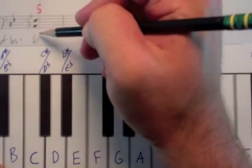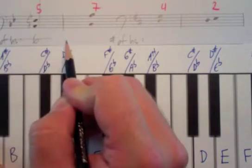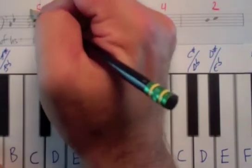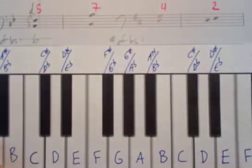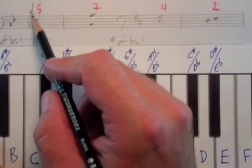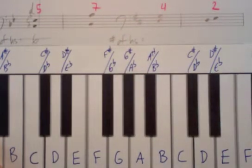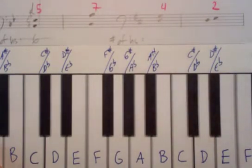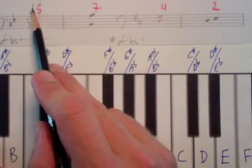Six half steps. So vertically, generic interval of a fifth. Horizontally, six half steps — where that meets, this is a diminished fifth. A diminished interval is a half step smaller than a perfect interval. The first example we did was a fifth with seven half steps — a perfect fifth, capital P. Half a step smaller than that is a diminished fifth, and we use a lowercase d.